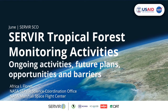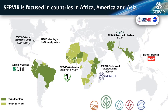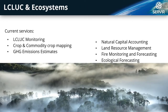My name is Africa Flores from NASA Servir Science Coordination Office, and today I'm going to talk about the different activities that Servir has related to tropical forest monitoring. Servir is a joint initiative between NASA and USAID, currently active in five regions. In each region we partner with centres of excellence. We work in different thematic areas including agriculture, land cover land use change and ecosystems, water and water-related disasters, and climate. The activities I will present are part of our land cover land use change and ecosystem thematic area, where we have a large portfolio with services across all hubs.